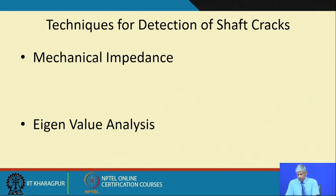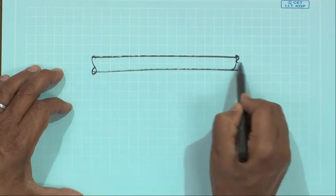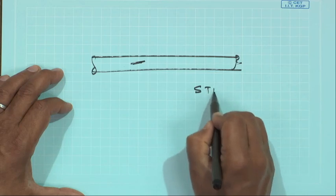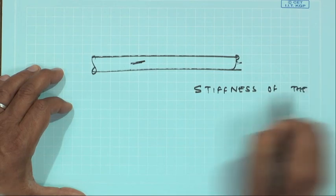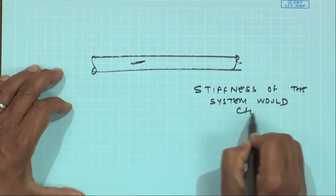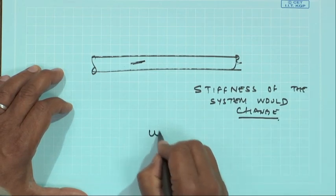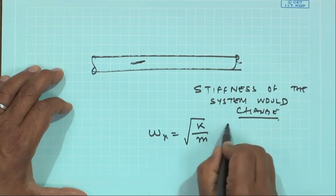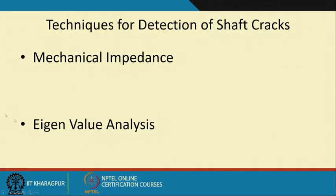Physically what happens is this: if there is a crack in a system, the stiffness of the system would change. As you know, ωn = √(k/m), so if the stiffness of the system changes then the natural frequency would change, and that would mean from an eigenvalue analysis we can detect this.